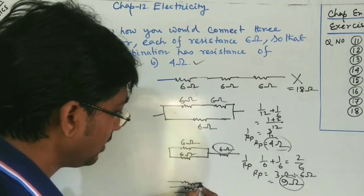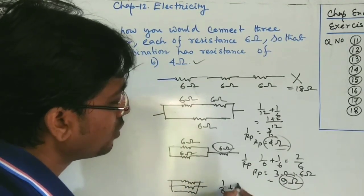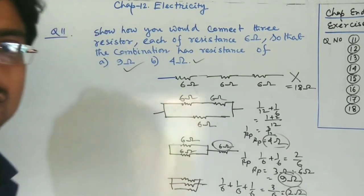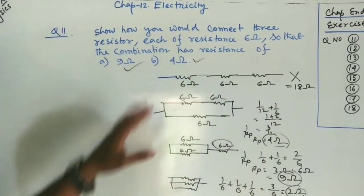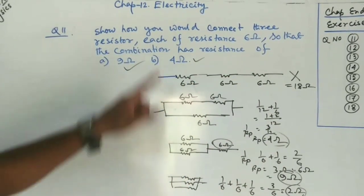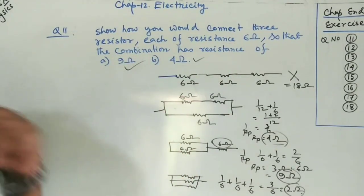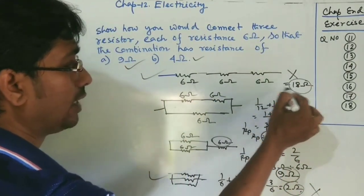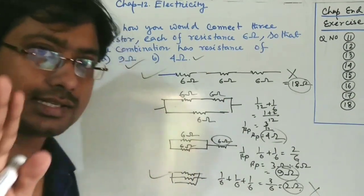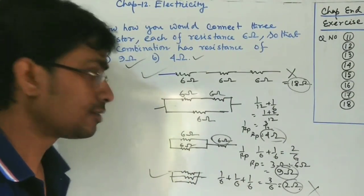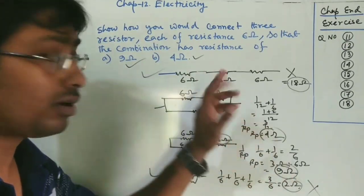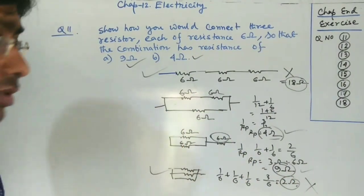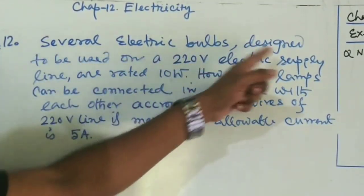To summarize, four combinations are possible for three 6-ohm resistors. The first (all series = 18 ohm) and the last (all parallel = 2 ohm) are discarded since those answers are not required. The two mixed combinations give 4 ohm and 9 ohm, which are the answers to question 11.